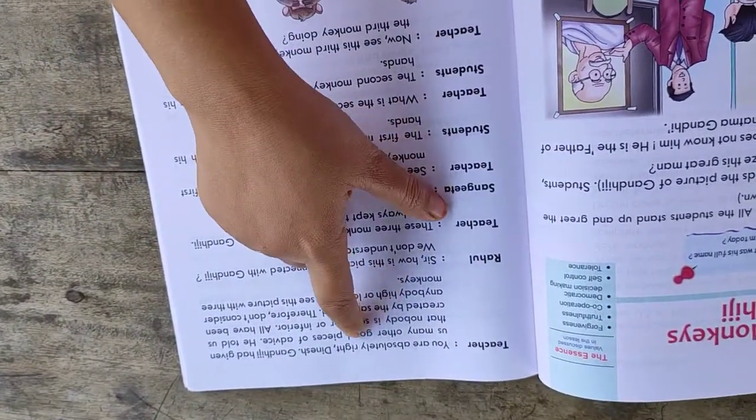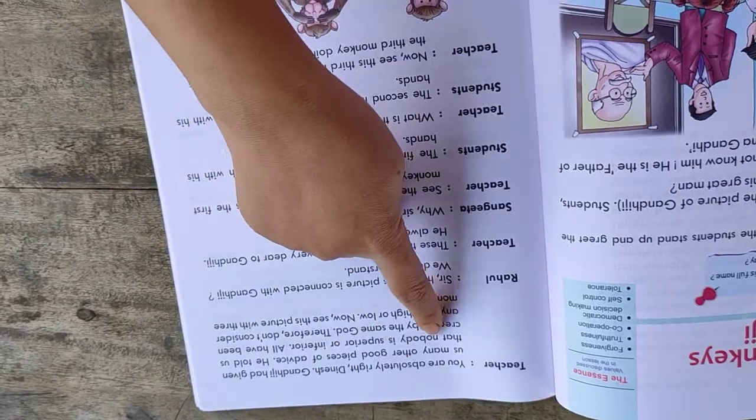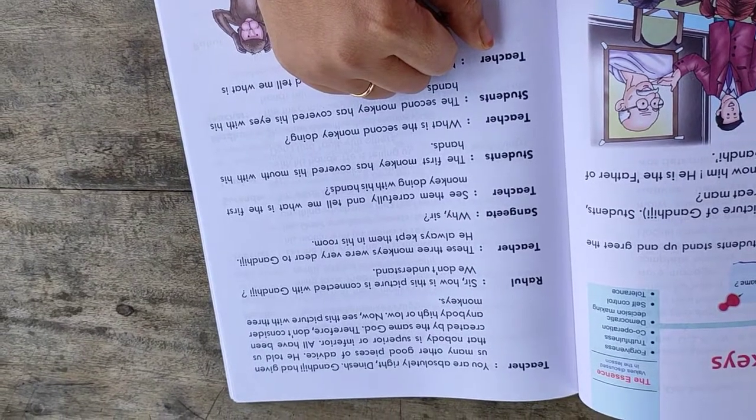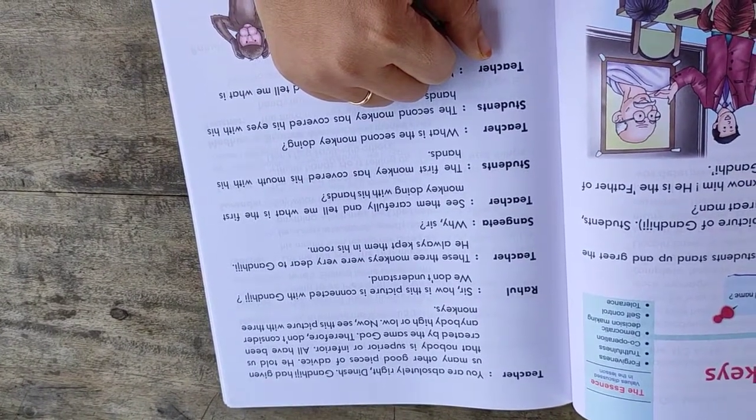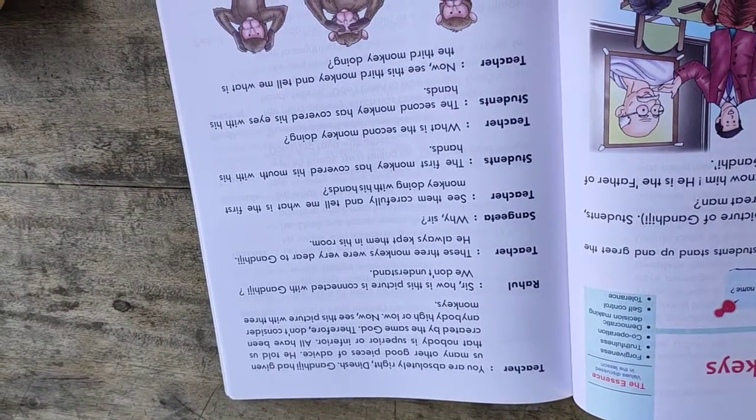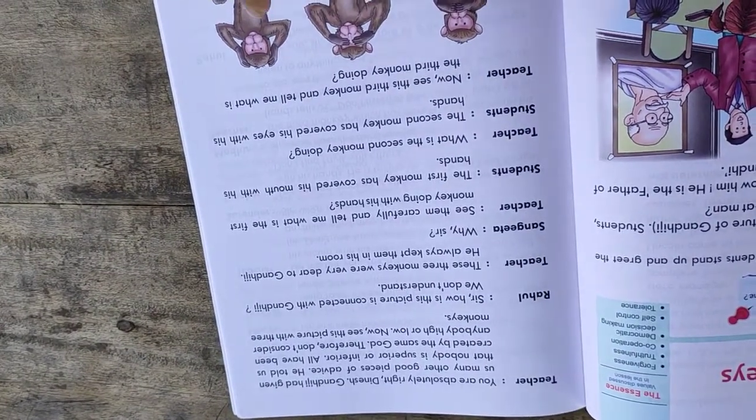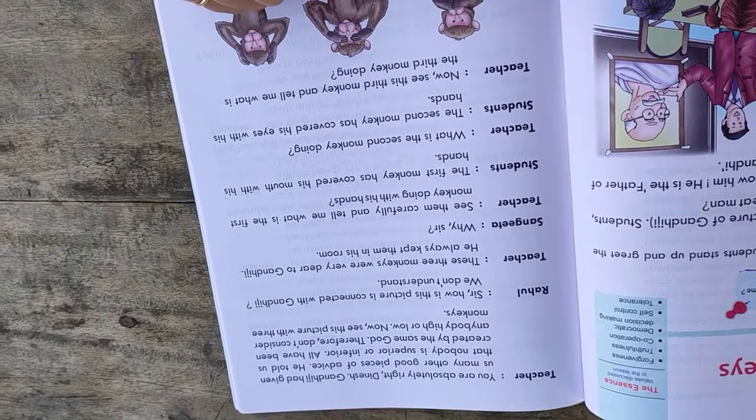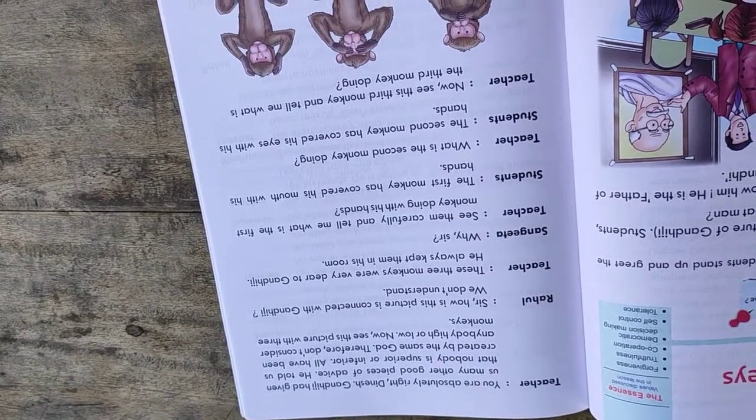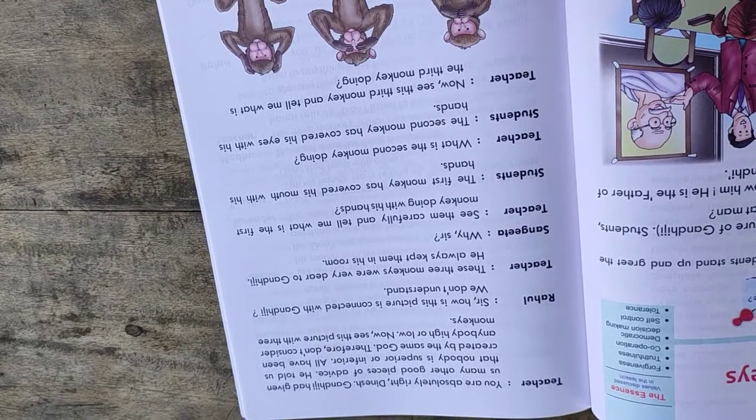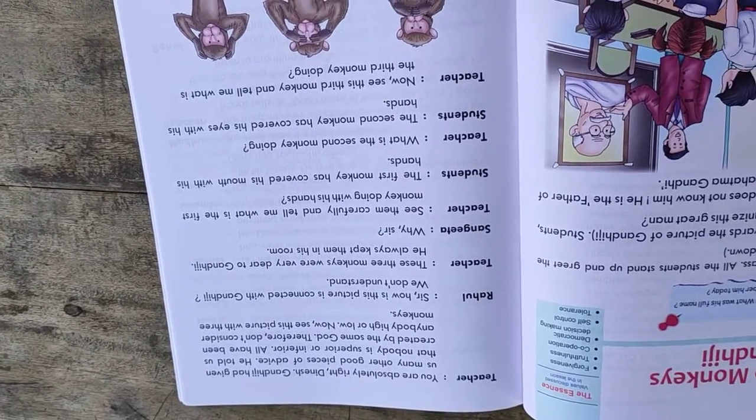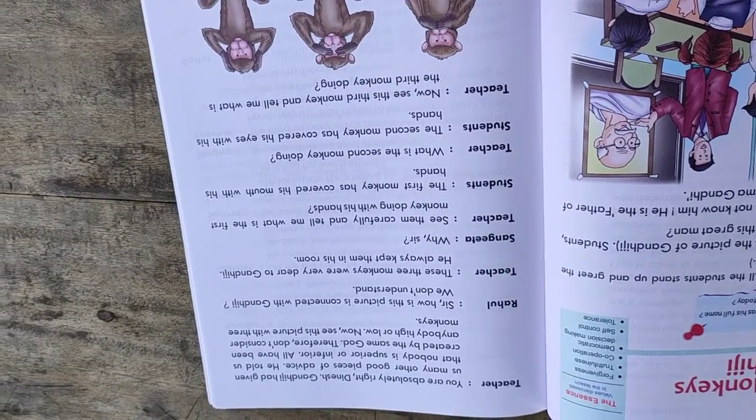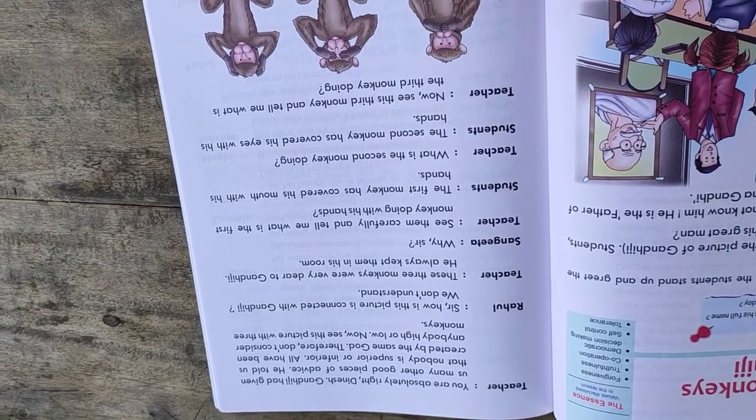Teacher says, you are absolutely right Dinesh. Gandhiji had given us many other good pieces of advice. He told us that nobody is superior or inferior. All have been created by the same God. Therefore, don't consider anybody high or low. Now, see this picture with three monkeys.